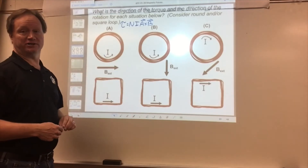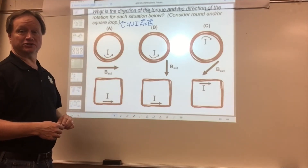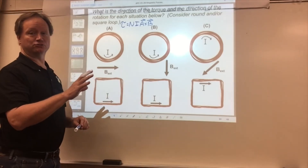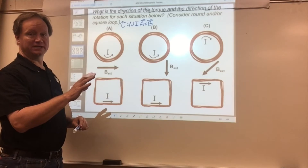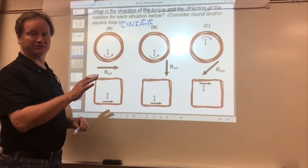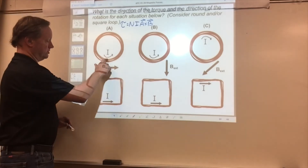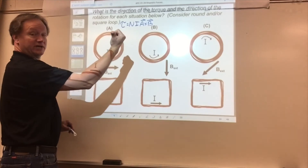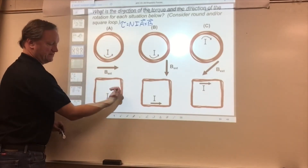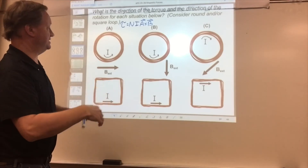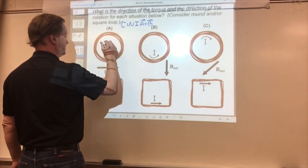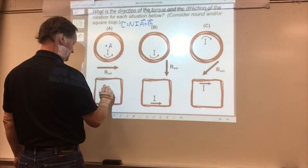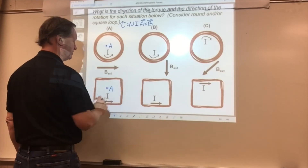Torque equals NiA cross B. The first thing you have to determine is the direction of A. To be able to do that, you wrap the fingers of your right hand in the direction of the current flowing in the loop, and your thumb will point in the direction of the area vector. So on our first loop, if I wrap my fingers around in that direction, my thumb points out. So my area vector on each of these would be out of the board.